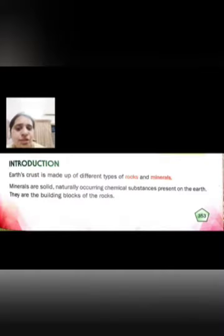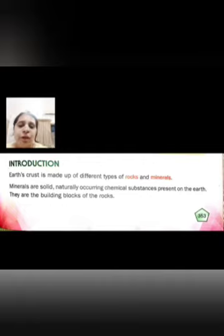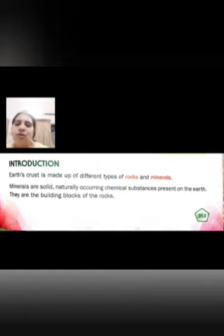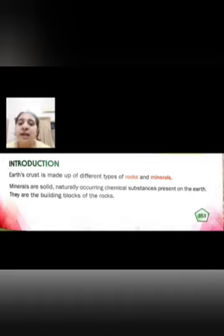Now let's talk about the earth's crust. You know how our earth has different layers. Our earth's crust is made up of different types of rocks and minerals. Minerals are solid, naturally occurring chemical substances present on the earth. They are the building blocks of rocks.